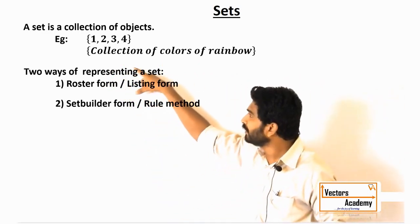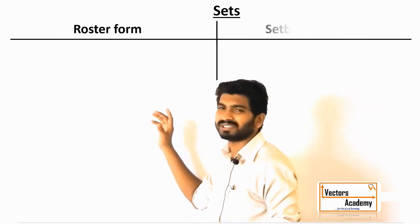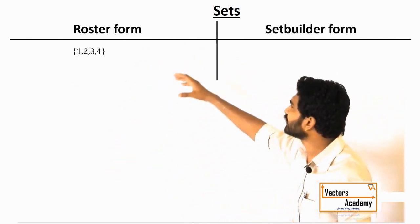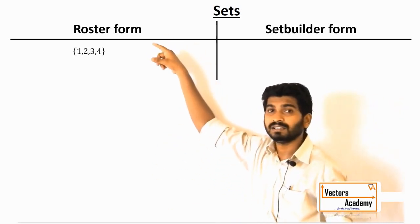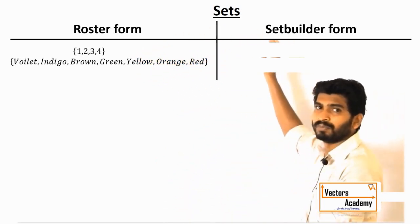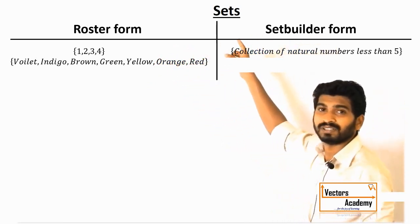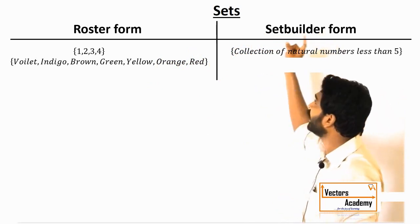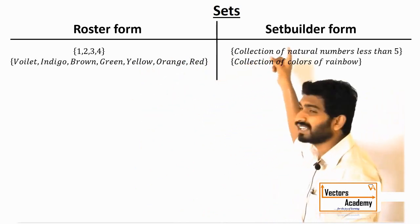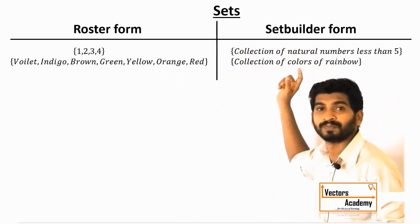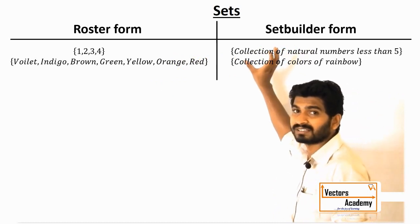This is called a set builder form, whereas the first one is called a roster form. Now, how to convert from roster form to set builder form? The first example: {1, 2, 3, 4} — these are all the natural numbers which are less than 5. The colors in the set are the colors of the rainbow. This way of representing is called the roster form or listing form; the other way is called the set builder form.